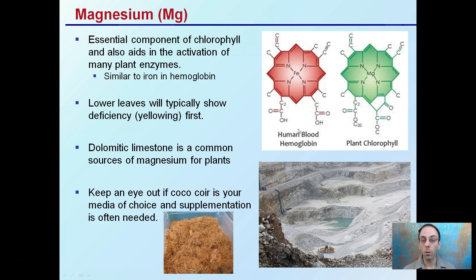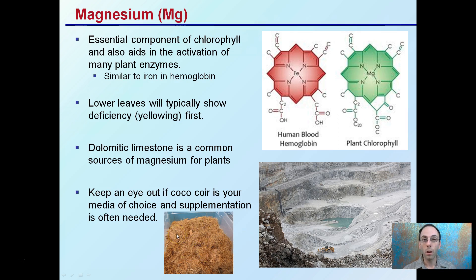The lower leaves will typically show a magnesium deficiency by yellowing first. Dolomitic limestone, the limestone we use to correct pH, is a common source of magnesium for plants. Keep an eye out if you're using coco coir, as supplementation is often needed — you may have to be adding more magnesium than a grower choosing another media source.